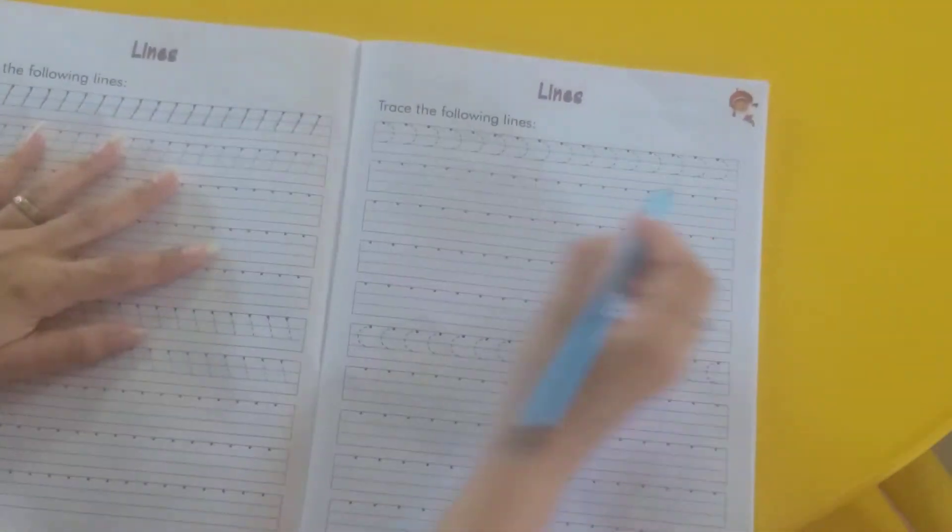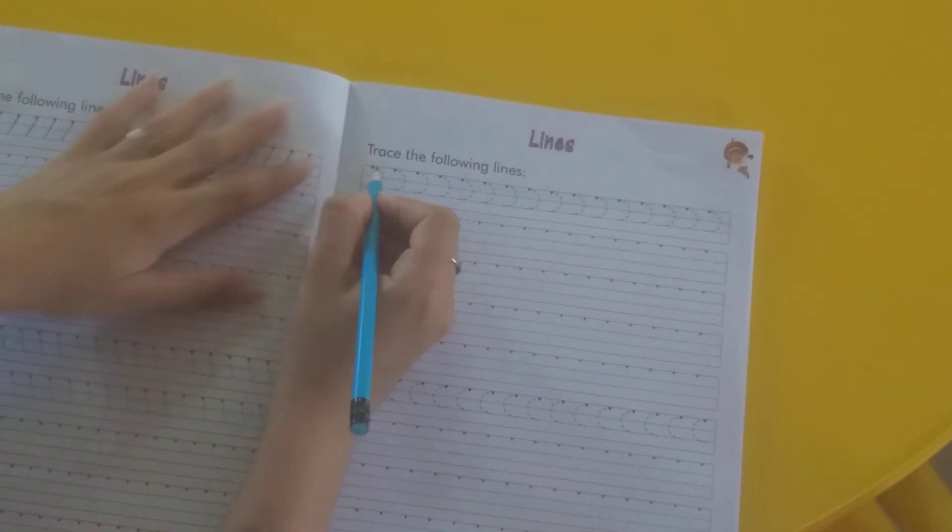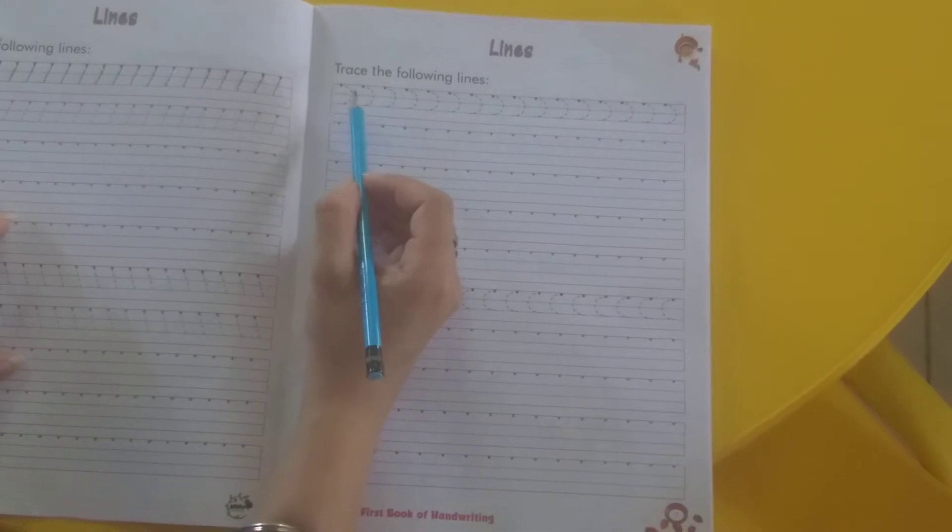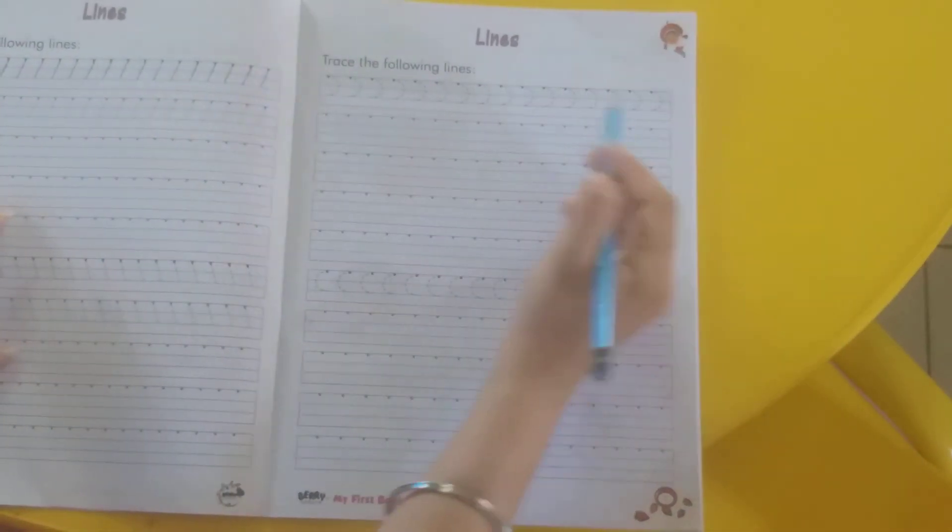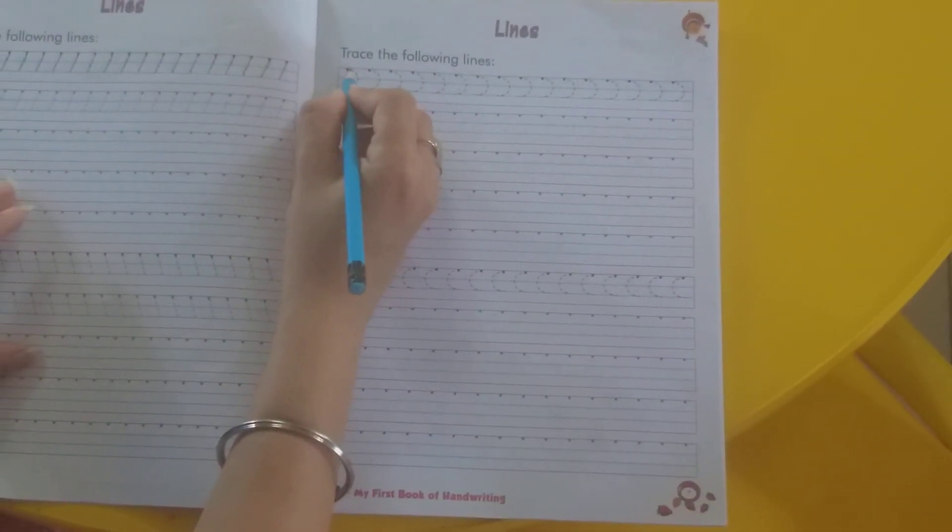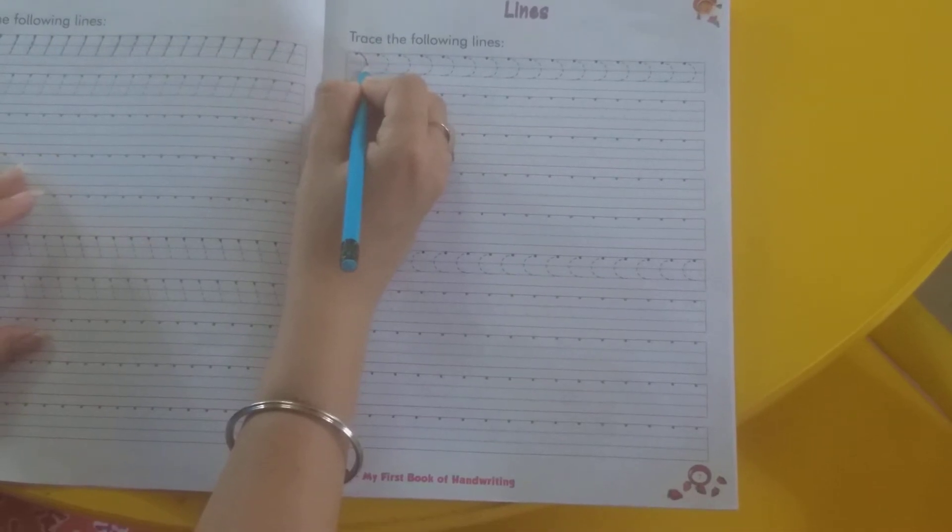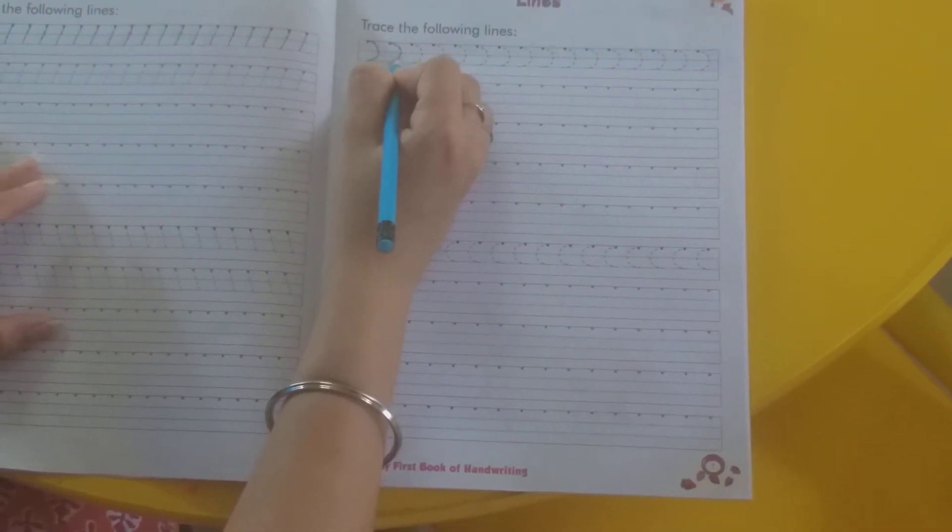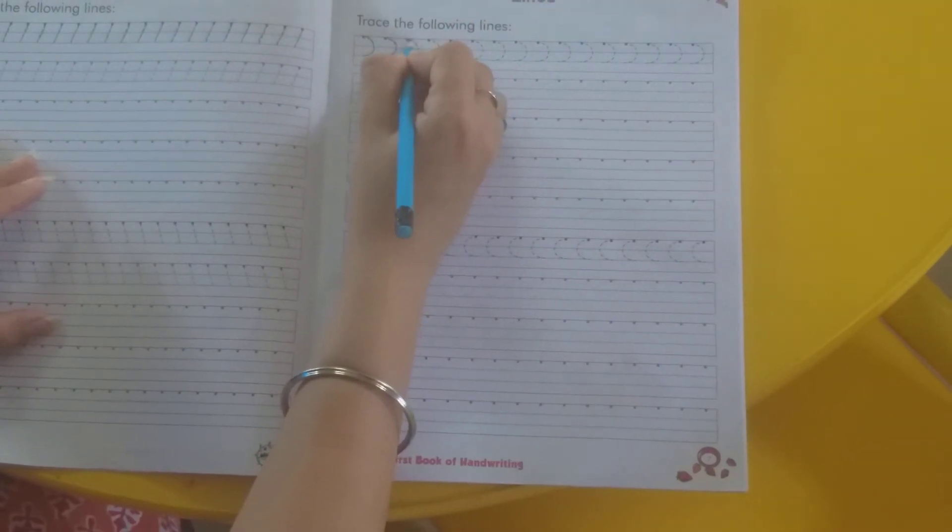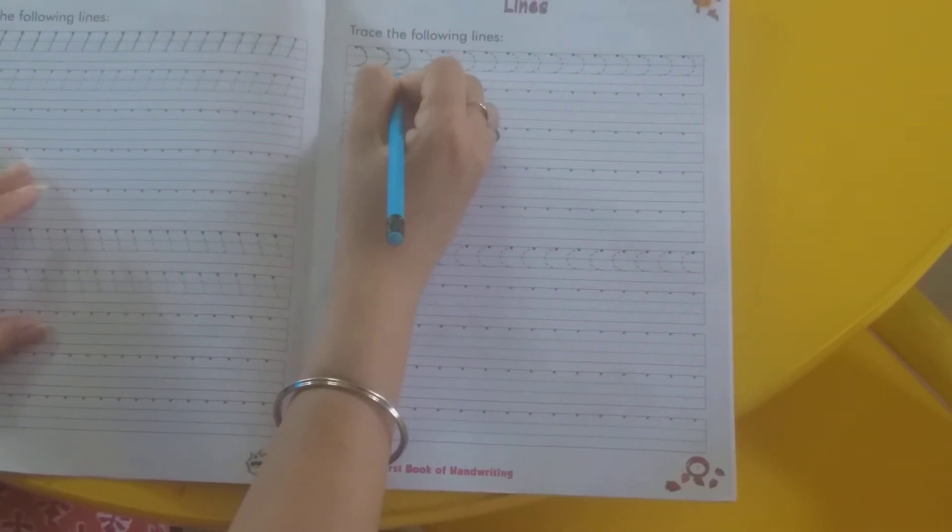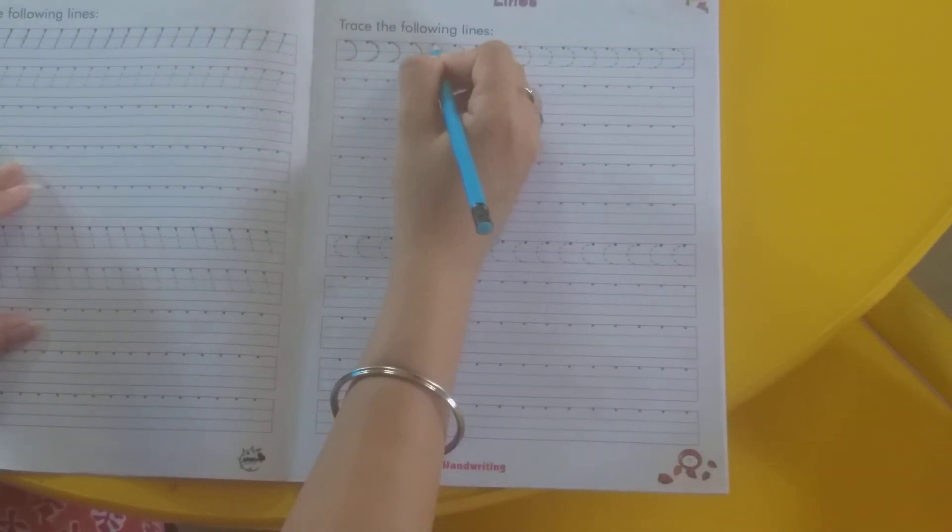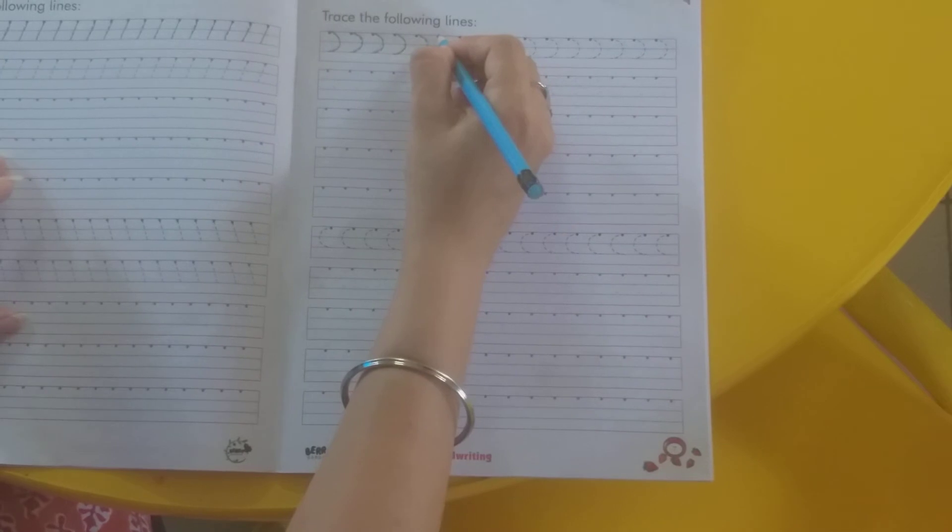Now we will do curve. Right? Now move to the next page. Page number 7. Now we will do curve lines. Right? Left curve. Right? Slowly slowly kareenge left curve. Deekha? Aise.